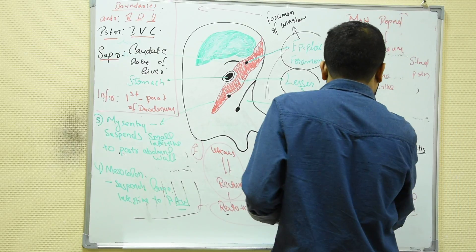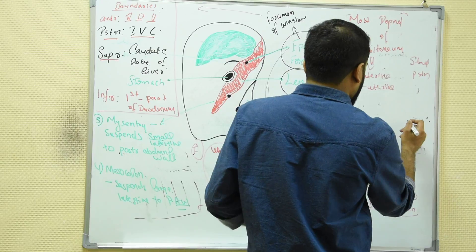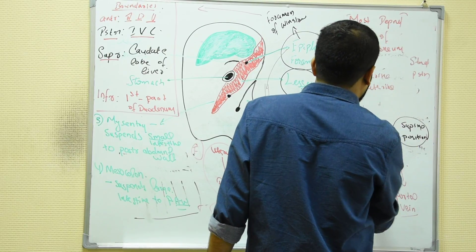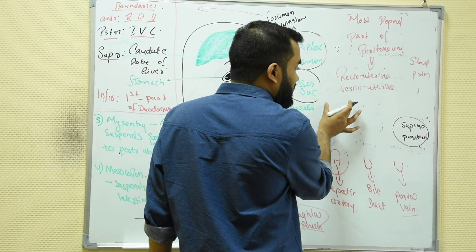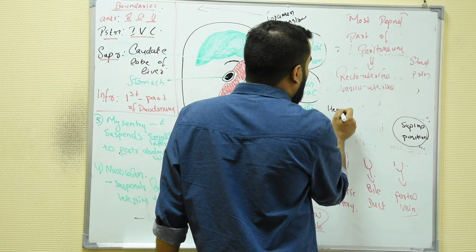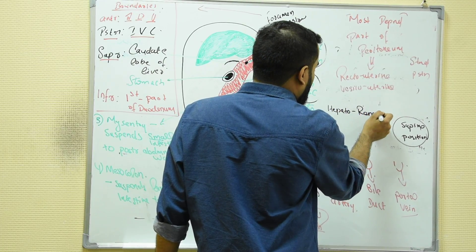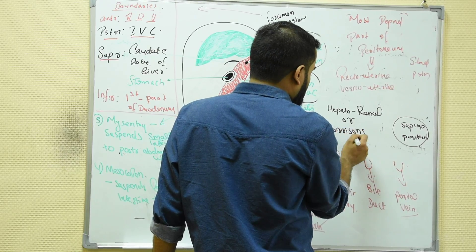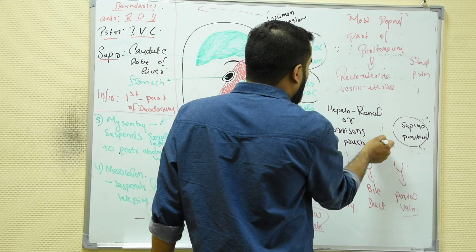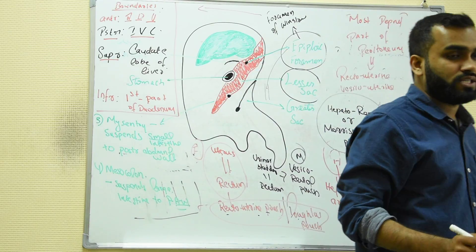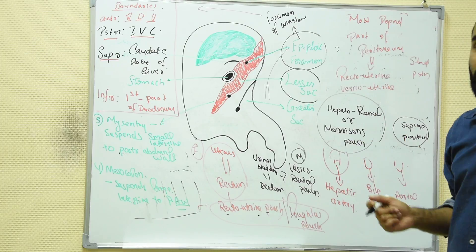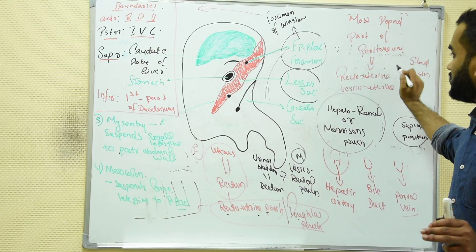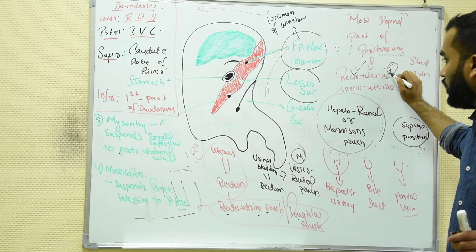If the question changes to the supine position — what is the most dependent part of the peritoneum in the supine position — the answer is the hepatorenal pouch, also called Morrison's pouch. It is the pouch located between the liver and the kidney.